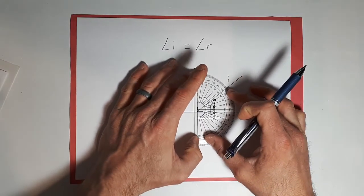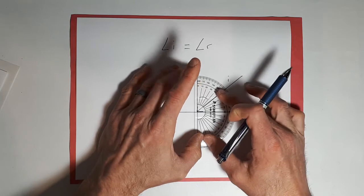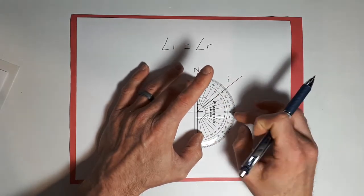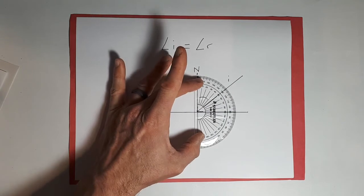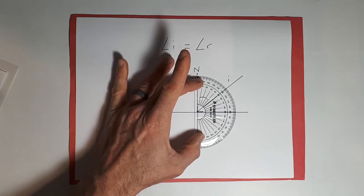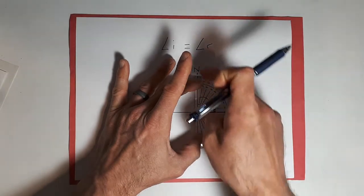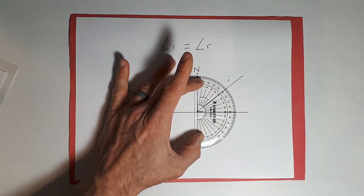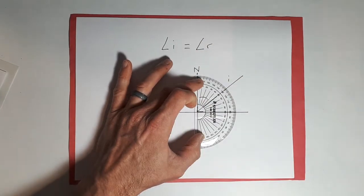So we take our protractor, and we're just going to put the zero on our normal, and the 90 on our mirror line. So note the protractor's orientation here, slightly different than what I just did to draw the normal. And we're measuring that angle here, so between the normal and the angle. And that's called our angle of incidence, or angle of I. L'angle d'incidence.